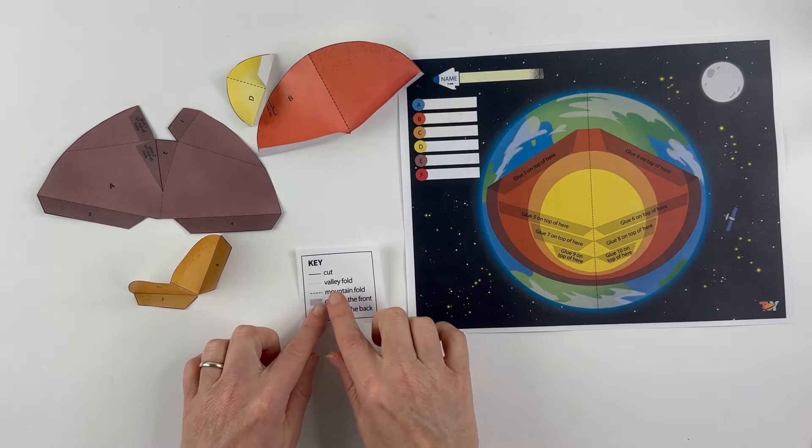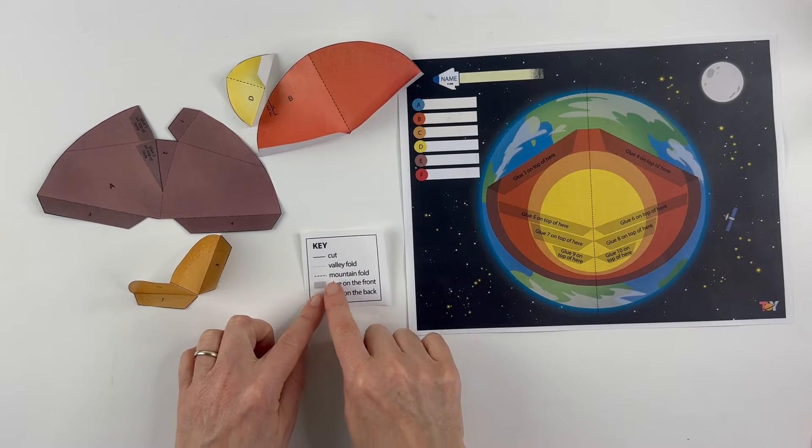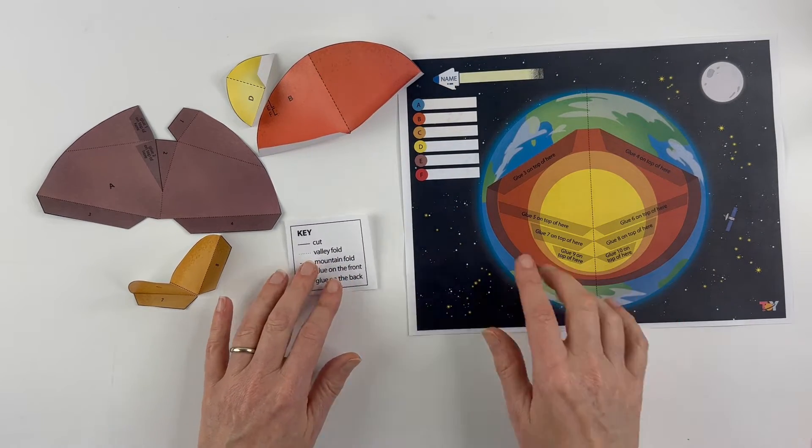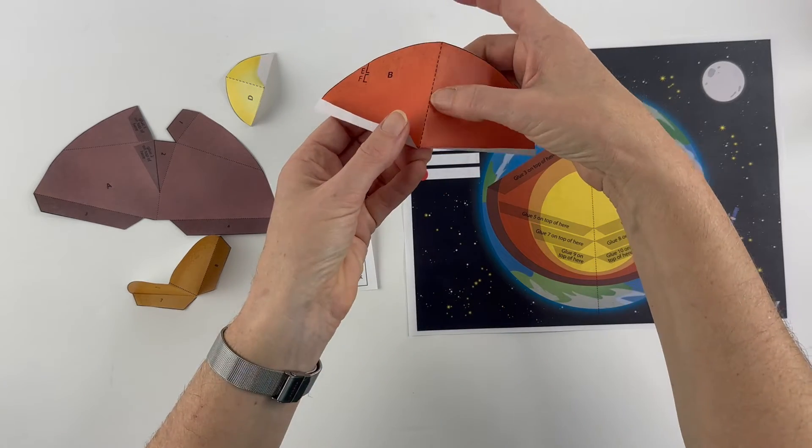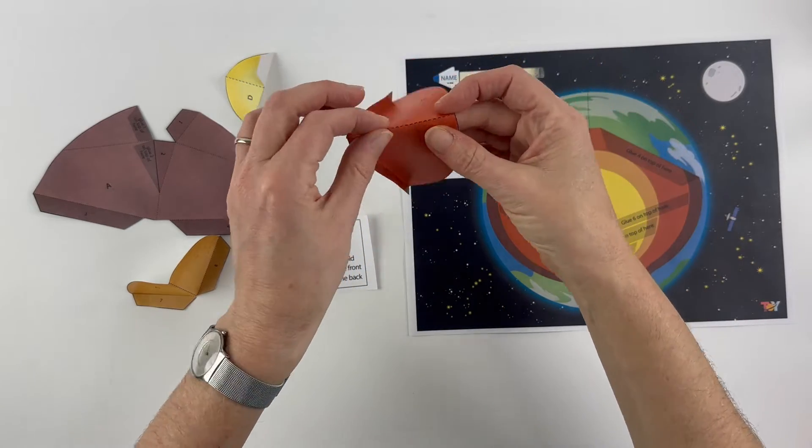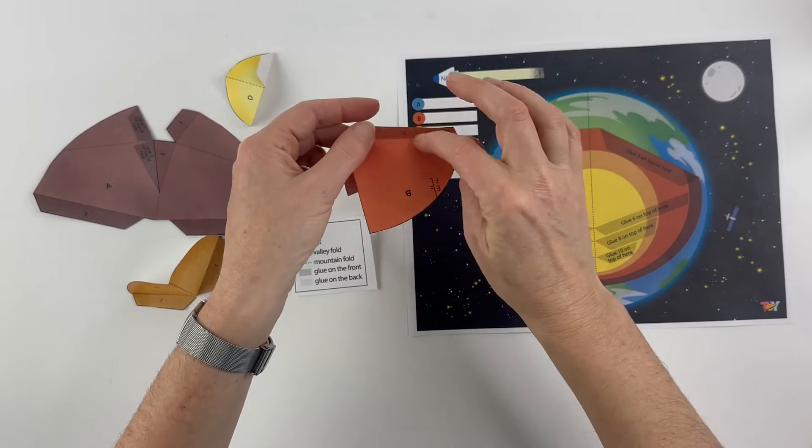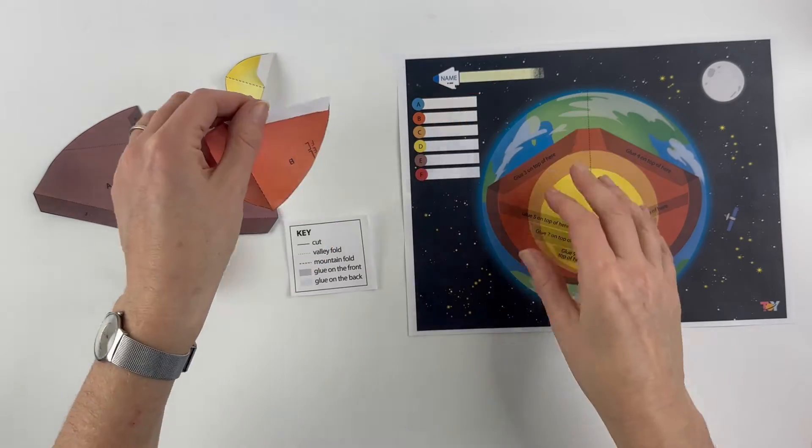So as you've noticed this says valley fold, this says mountain fold. So if you have the longer lines, longer dotted lines like this, fold it like a mountain. The shorter dotted lines fold it like a valley.